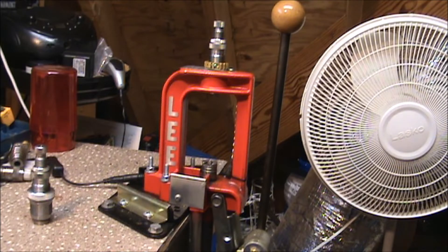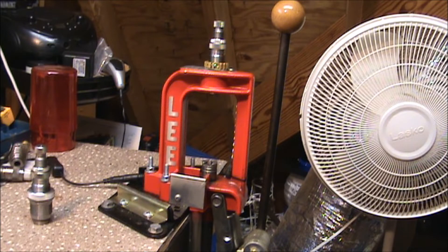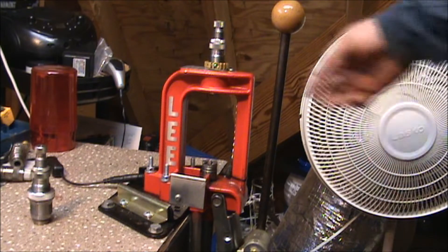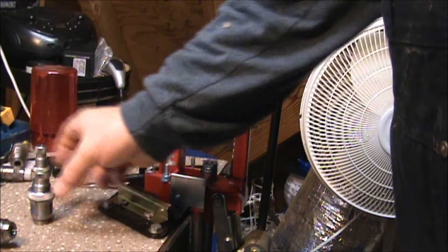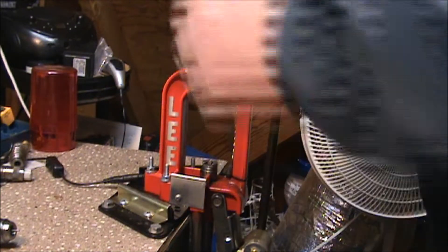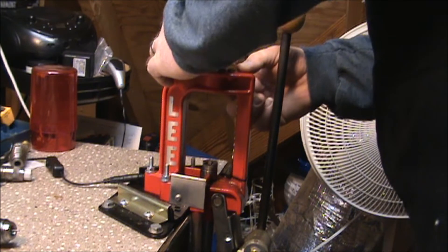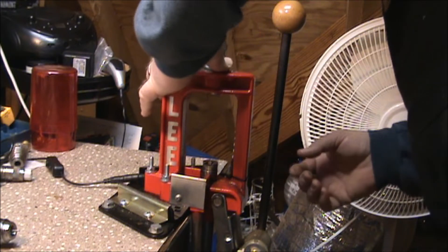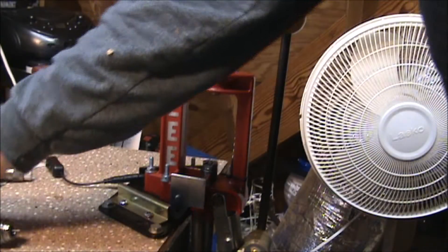The next thing we'll do is just change out our die and then we'll put in our flare die. Basically what this does is opens up the mouth of the case where it will accept a new bullet.